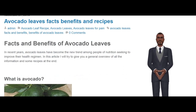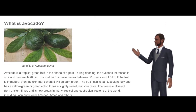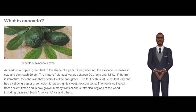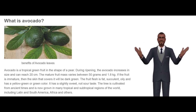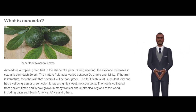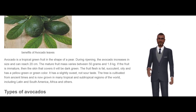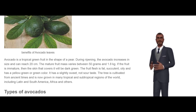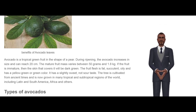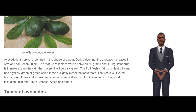What is avocado? Avocado is a tropical green fruit in the shape of a pear. During ripening, the avocado increases in size and can reach 20 cm. The mature fruit mass varies between 50 g and 1.8 kg. If the fruit is immature, then the skin that covers it will be dark green. The fruit flesh is fat, succulent, oily and has a yellow-green or green color. It has a slightly sweet, not sour taste. The tree is cultivated from ancient times and is now grown in many tropical and subtropical regions of the world, including Latin and South America, Africa and others.